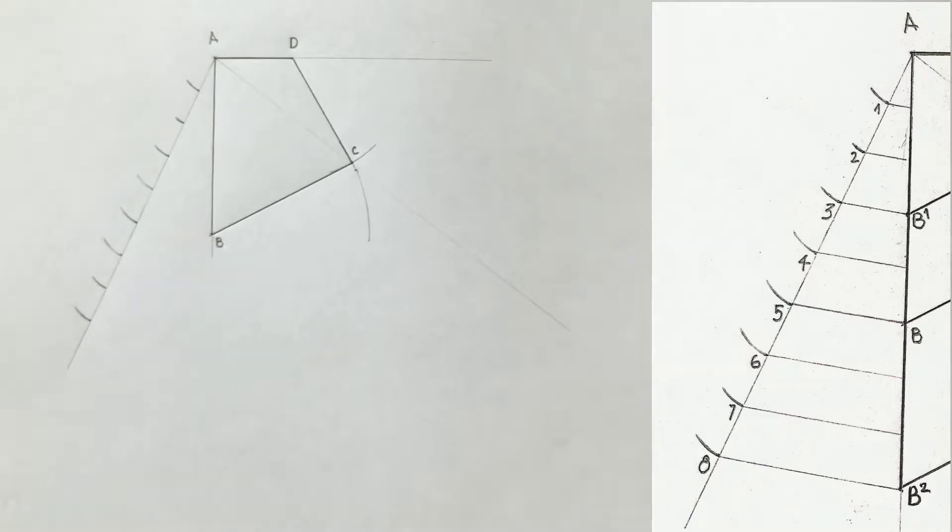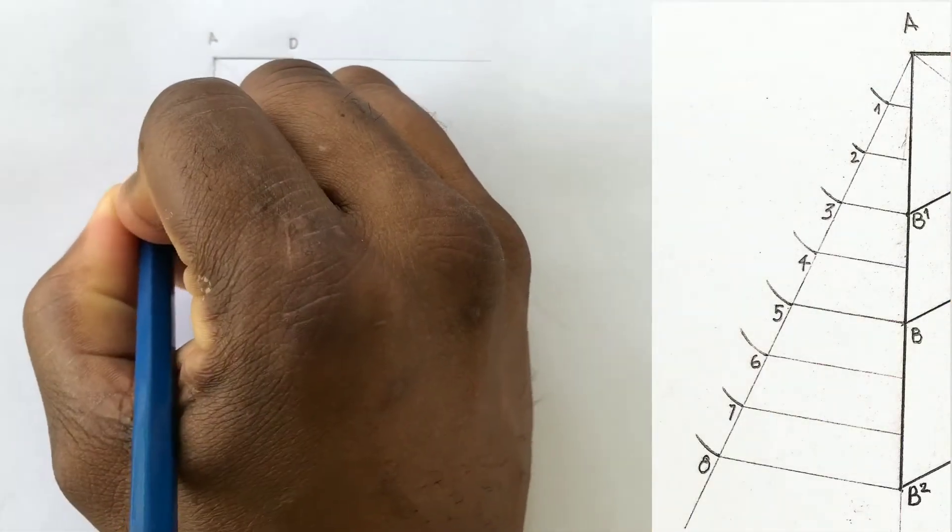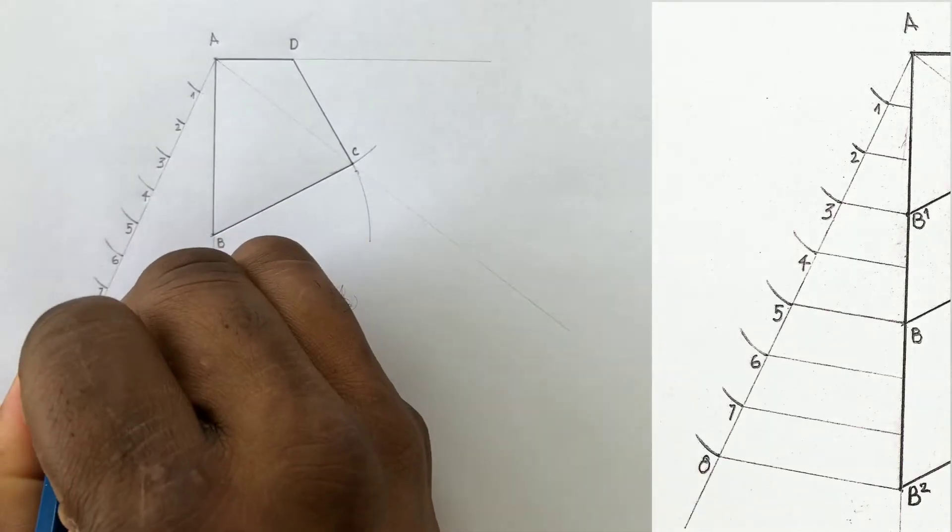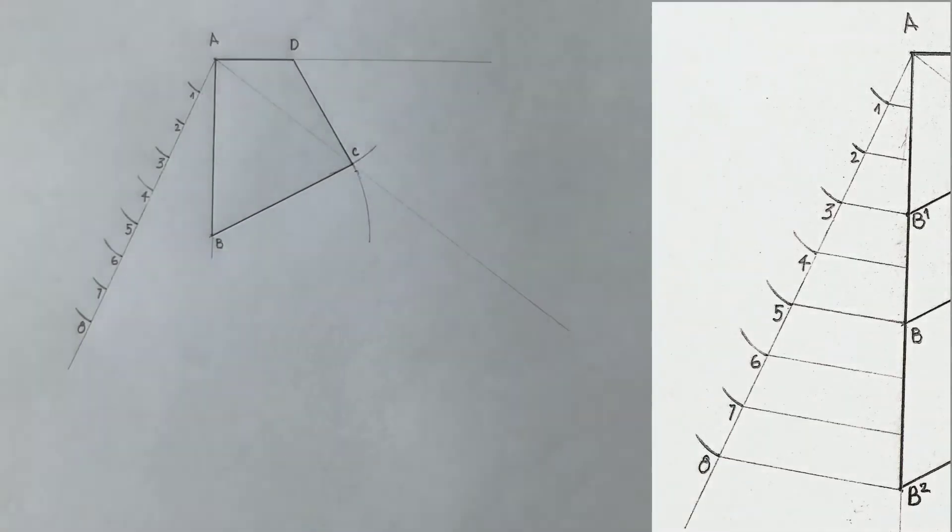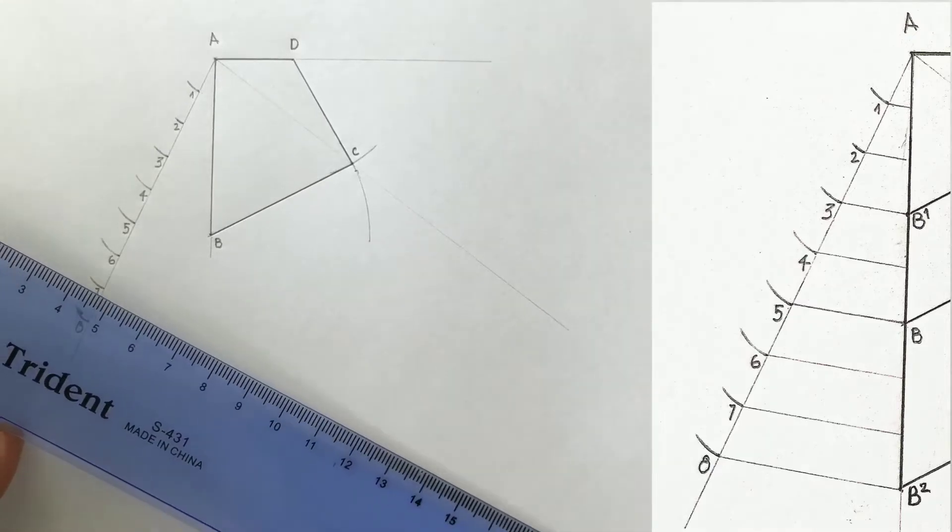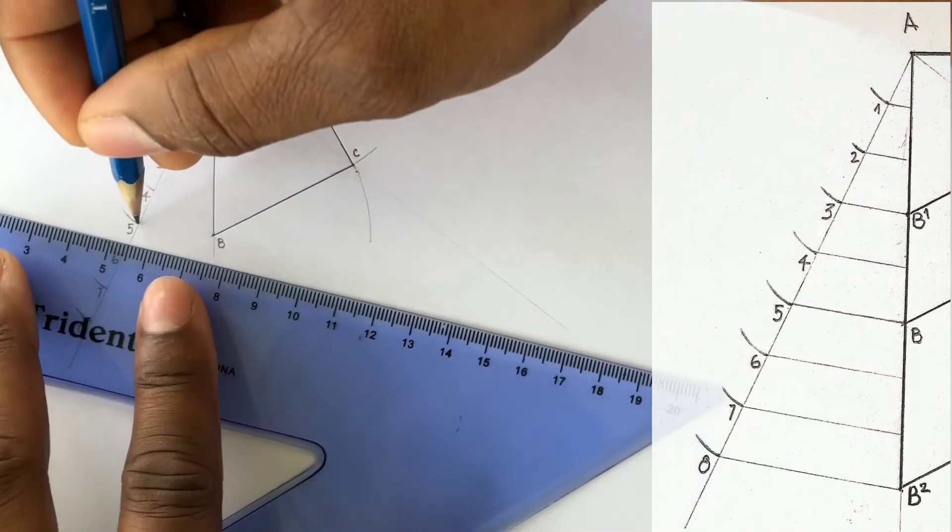Now label the intersection of arcs from 1 to 8. Now given a reduction ratio of 3 to 5, you will reduce the quadrilateral. From the 5th division, based on the ratio, you will draw a line to point B.